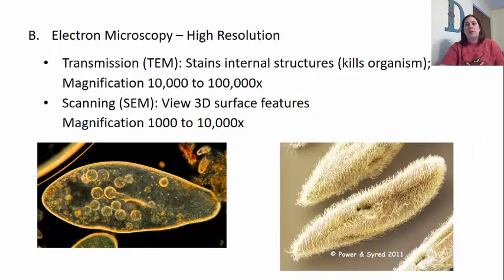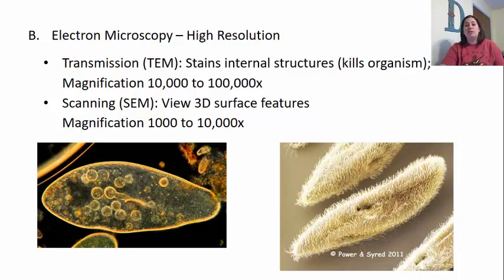The other group of microscopes we'll talk about are electron microscopes. Electron microscopes allow very high resolution, magnifying and showing detail much better than our light microscopes can. There are two main types. The first are transmission electron microscopes, or TEMs, which look at stained internal structures but kill the organism in the process. They allow magnification of 10,000 to 100,000 times. There's also the scanning electron microscope, or SEM, which allows you to view 3D structures on surfaces. It doesn't magnify as greatly as the TEM, but lets you see external structures in detail, magnifying about 1,000 to 10,000 times.